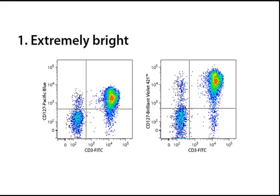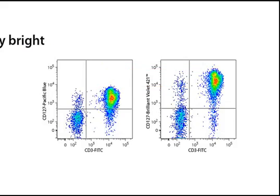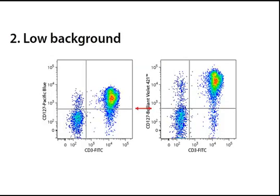In this case with CD127, the BV421 signal is more than tenfold better than Pacific Blue. Furthermore, there is no increase in signal from the negative population, demonstrating that BV421 antibodies have minimal background staining.